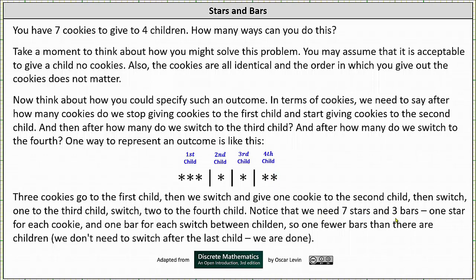Notice that we need seven stars and three bars, one star for each cookie, and one bar for each switch between children. So notice there's one fewer bars than there are children. We don't need to switch after the last child because we are done.